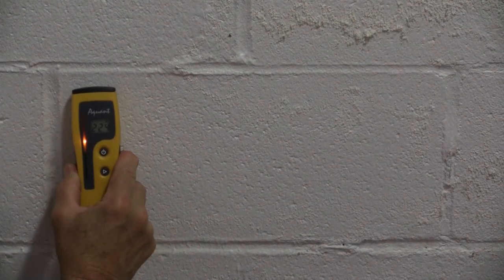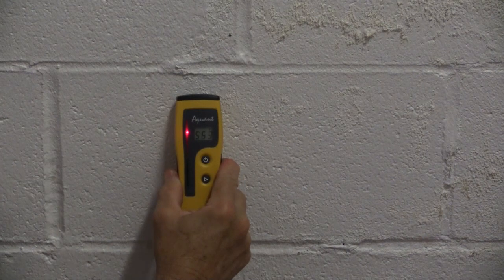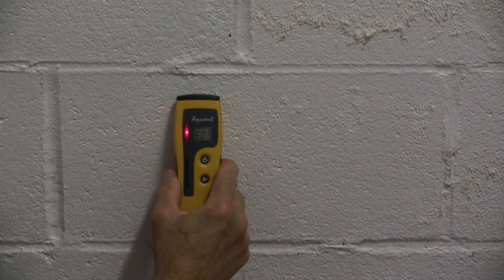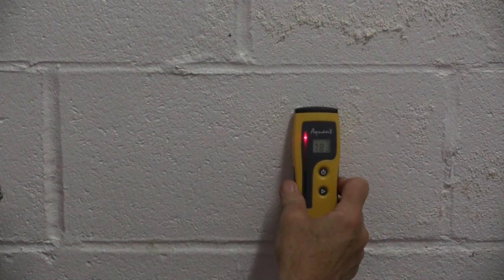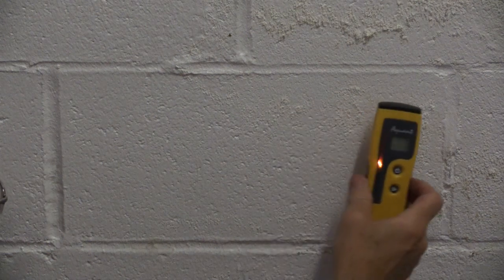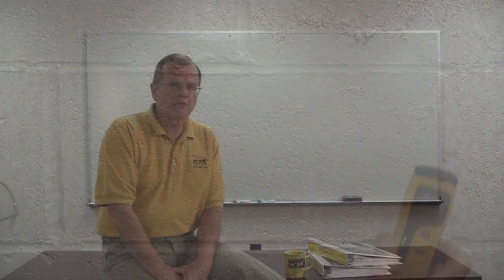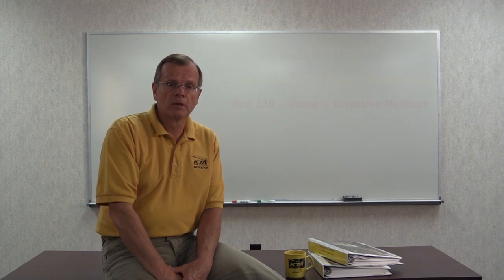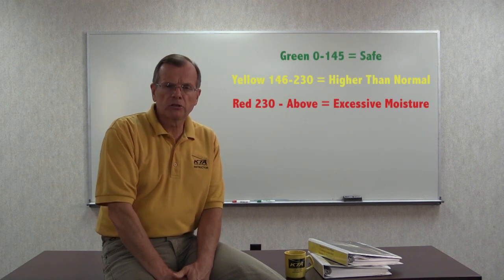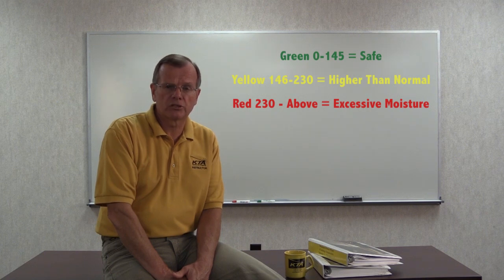Another moisture meter is based on radio frequency. This instrument utilizes radio frequency to assess and monitor the relative moisture level in porous materials such as concrete. The instrument from one manufacturer provides readings on a relative scale from 0 to 999. The instrument displays the results using both a color and a number.